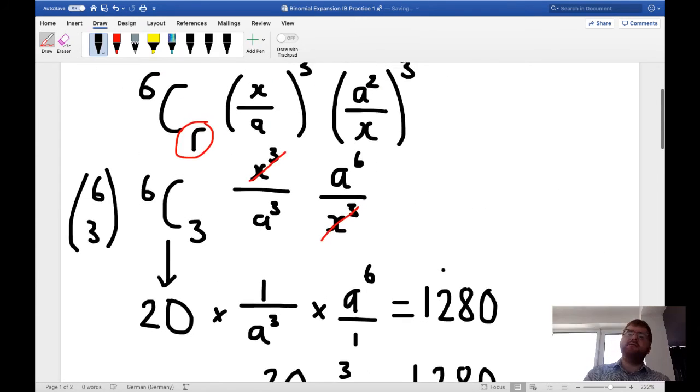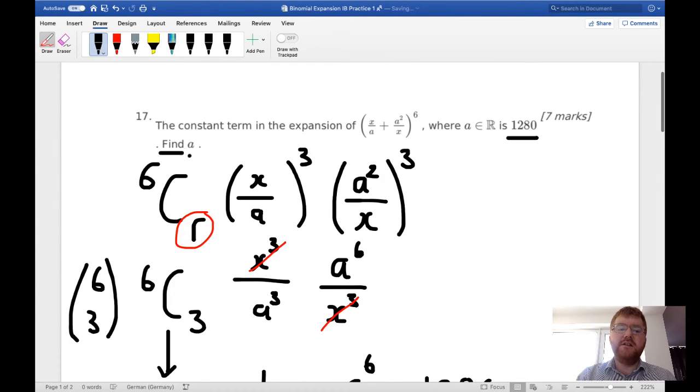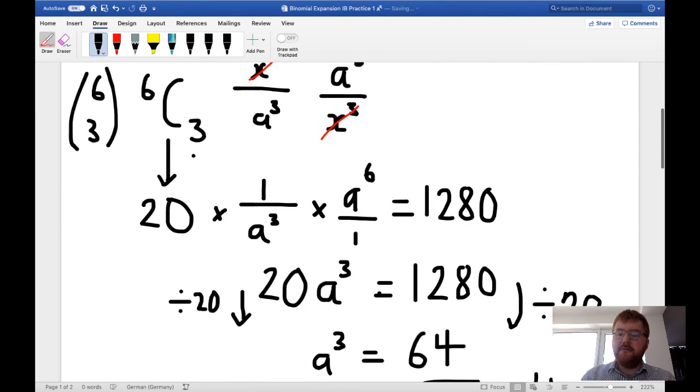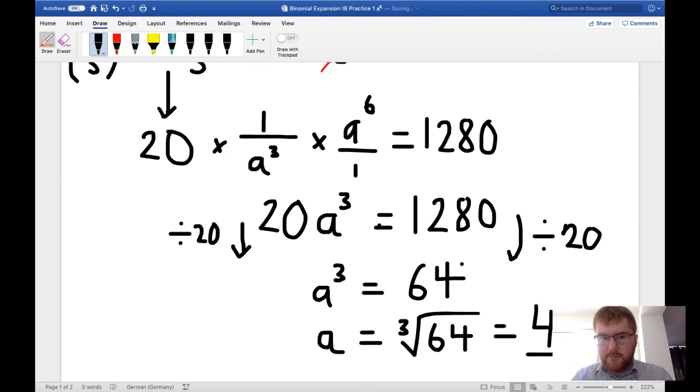Notice if we took the square root, we'd have two answers, but because we take the cube root, we only have one answer, which is 4 in this case. And the question kind of tells you that as well. So if it says find a, well there's only going to be one value of a. If it says find possible values of a, then it usually means that there are two or more answers, so therefore there'd be plus or minus 4 if it was a square root, for example.